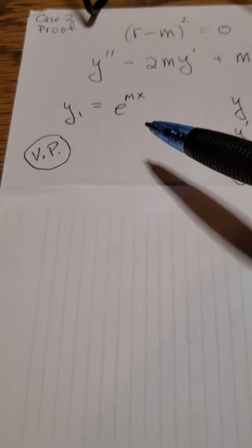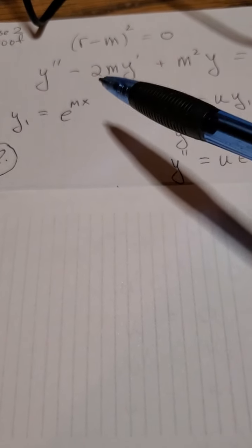Now we're going to do an old favorite method that we learned already, namely variation of parameters. So we're going to let y1 equal e to the mx, because we know that e to the mx will solve this differential equation.